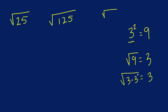So when looking at square roots, we want to find a pair of numbers and then we take it out as 1.